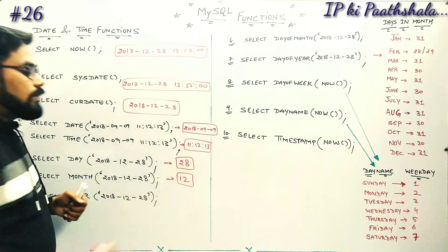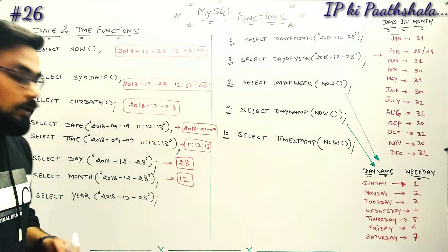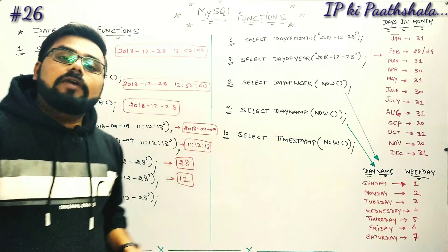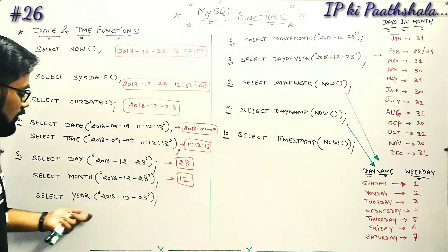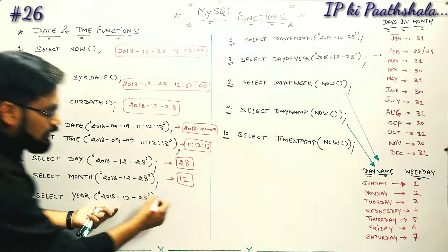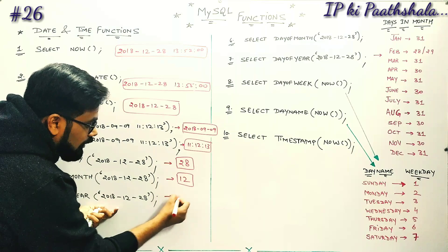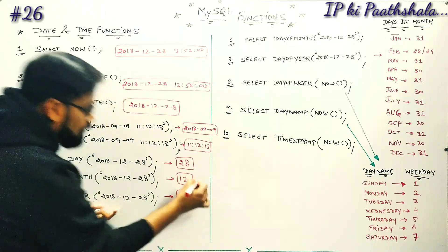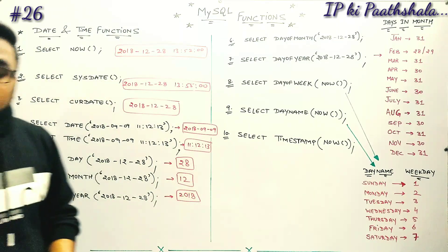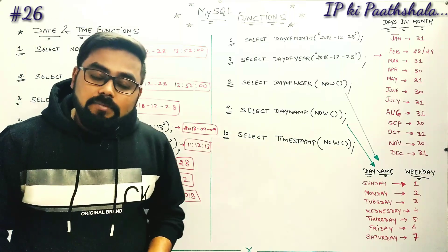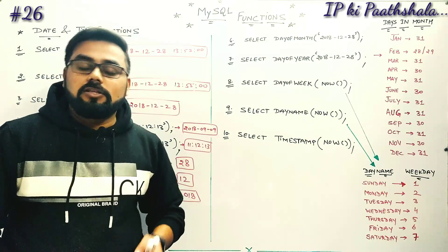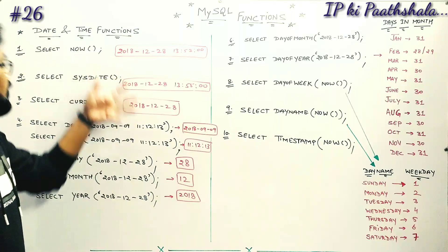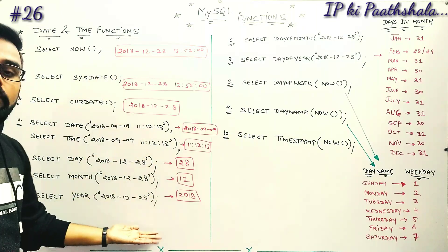For DAY(), the minimum value is 1 and maximum value is 31. For YEAR(), the section shows 2018, which is a 4-digit number. In the case of year, you can insert any 4-digit value. In this particular case, I will solve 5 functions.